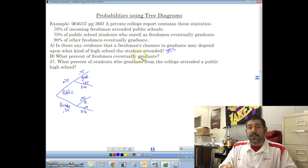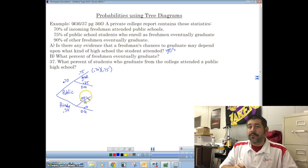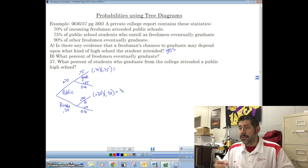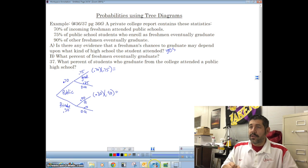The answer to this is yes, and the explanation I just gave. What percent of freshmen eventually graduate? Well, we can graduate if we came from a public high school. In this case, the probability from coming from a public high school and graduating is 0.7 times 0.75. So we're going to multiply these two probabilities. We can also graduate coming from a private high school. And that probability is 0.30 times 0.90. So this probability and this probability, let's go ahead and add those up together.